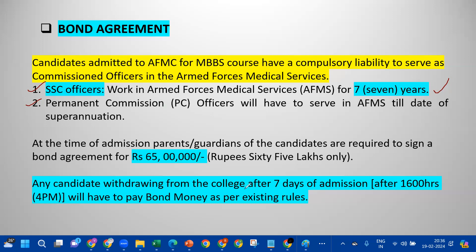Any candidate withdrawing from the college after seven days of admission, after 1600 hours (4 pm), will have to pay bond money as per existing dues — a penalty of 65 to 75 lakhs. The same thing applies if you are a permanent commission officer — you cannot decide on a second day. There is a lot of severe punishment.